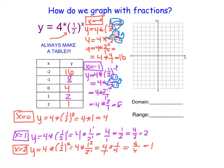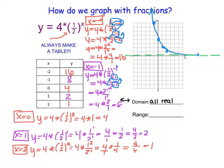Plotting the points: (-2, 16) doesn't quite fit, (-1, 8), (0, 4), (1, 2), (2, 1). The graph forms that same general swoosh shape, getting very close to the x-axis with a horizontal asymptote that we don't cross. The domain is all real numbers, since x values go forever left and right. The range uses all positive y values going up forever, getting very close to 0 but not touching it, so the range is y greater than, but not equal to, 0.